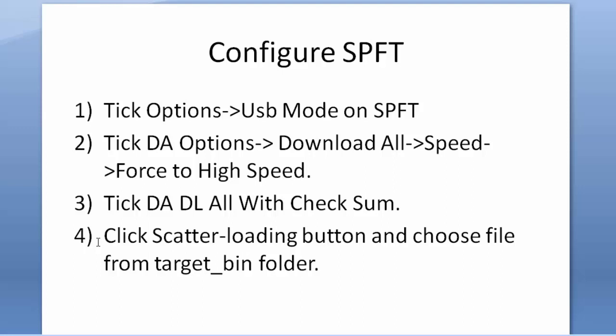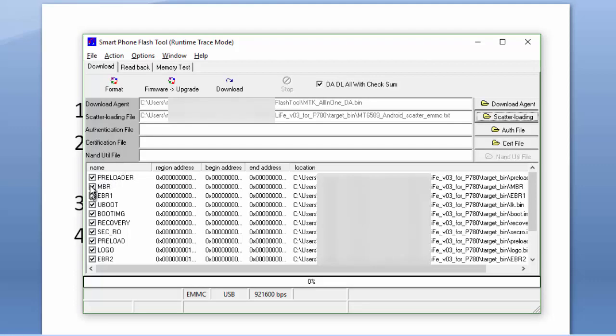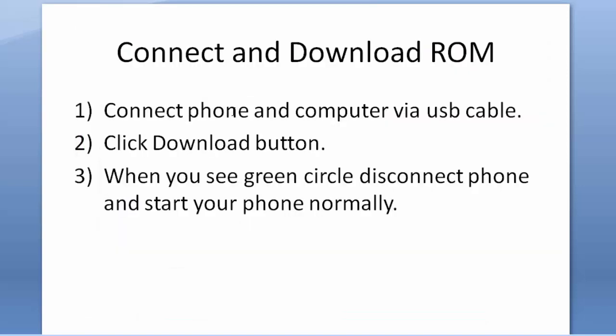Fourth, click the Scatter Loading button and choose the file from the target bin folder. Make sure it is all ticked after loading the scatter file, like shown here. Then connect your phone and computer via USB cable and make sure you hear the USB plugin sound from your computer.